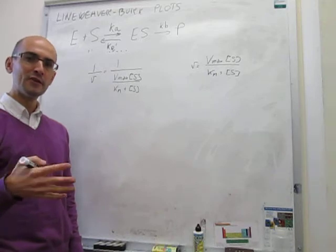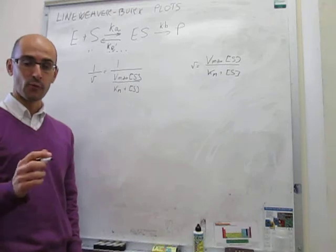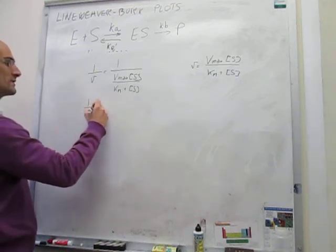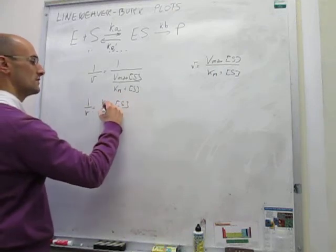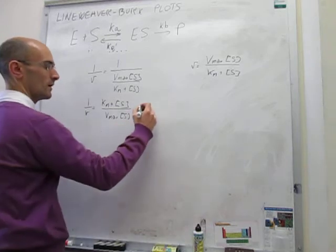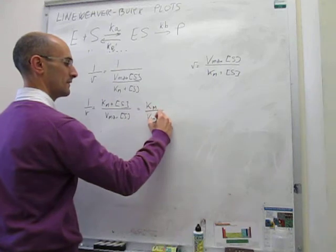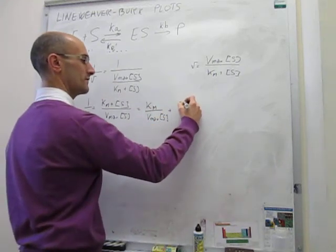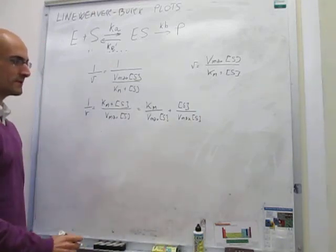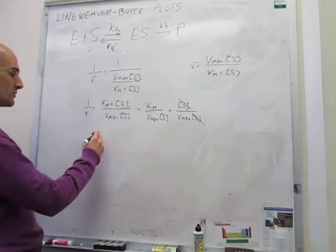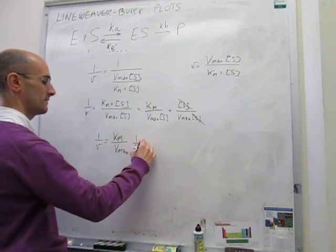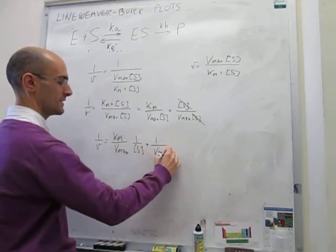After you try to do it yourself, you can continue the video and see how I actually solve it. So this expression is exactly the same as 1 over V equals Km plus concentration of S, all over V max times concentration of S. Here we have a sum in the numerator that you can separate into the sum of two ratios, and you can cancel out the concentration of substrate. That allows you to have 1 over V equals Km over V max times 1 over S, plus 1 over V max, and this is what we call the Lineweaver-Burk representation.